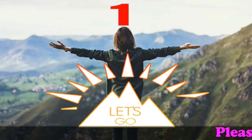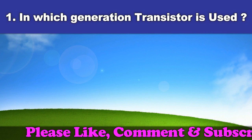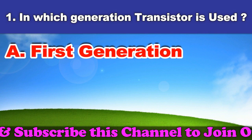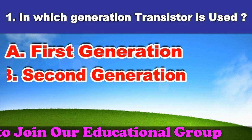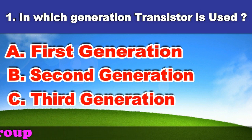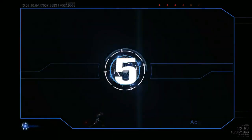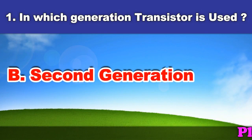First question: In which generation is the transistor used? A. First generation. B. Second generation. C. Third generation. D. Fourth generation. And the answer is second generation.